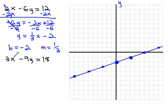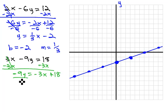And we can do the same thing to the other equation. We can subtract 3x from both sides, negative 9y equals negative 3x plus 18. Divide each term by negative 9, and we get y equals 1 third x minus 2. And so this one's going to start with a y intercept at negative 2 and a slope at 1 third.